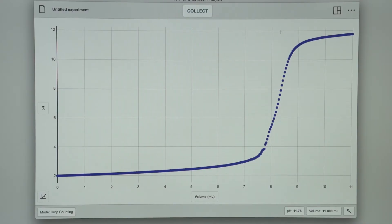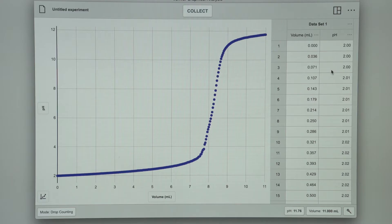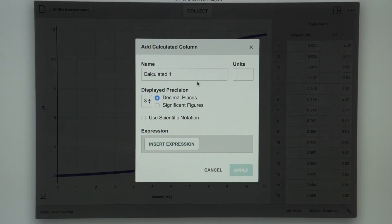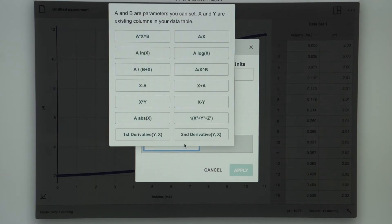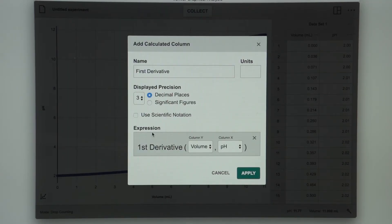First, I will remove the examine line, and then from the square icon, change the view to graph and table. Then, I click on the dots in the pH column and select Add Calculated Column. I will rename this First Derivative. Tap on Insert Expression and select First Derivative, making sure column Y is Volume and column X is pH. Tap Apply.